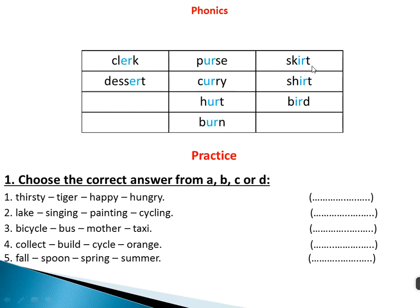Skirt — s-k-i-r-t — skirt, meaning a type of clothing. Shirt — s-h-i-r-t — shirt, the top we wear. Bird — b-i-r-d — bird, meaning a flying animal.